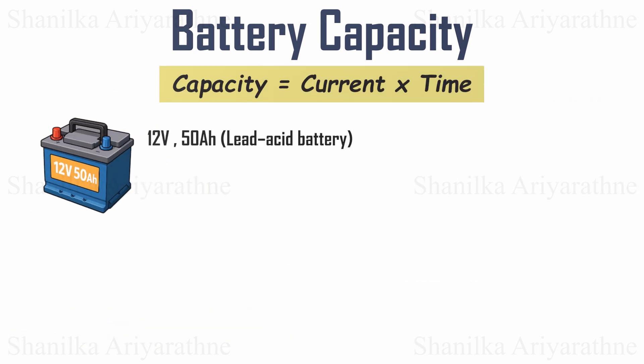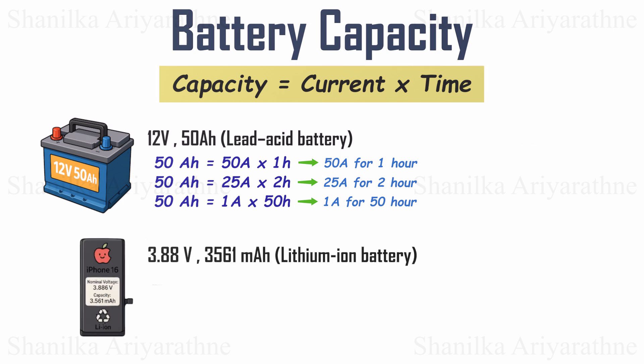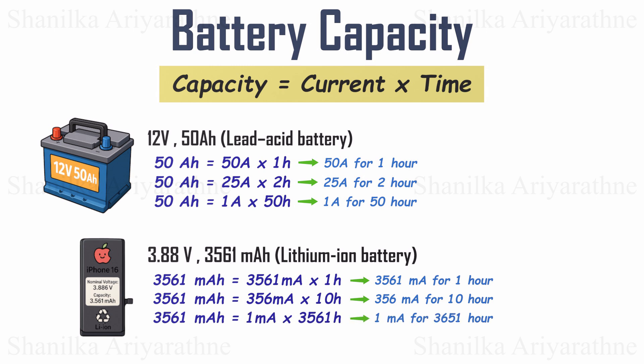Let's look at an example. Take this car battery — it's labeled with a nominal voltage of 12 volts and a capacity of 50 amp hours. That means it can deliver 50 amps for 1 hour, 25 amps for 2 hours, or 1 amp for 50 hours, all at 12 volts. Compare that to the iPhone 16 battery: nominal voltage of 3.88 volts and a capacity of 3,561 milliamp hours. It could theoretically deliver 3,561 milliamps for 1 hour, 356 milliamps for over 10 hours, or 1 milliamp for 3,561 hours. Drawing more than the rated capacity or pushing the battery beyond its limits can damage it, so always stay within the safe range.